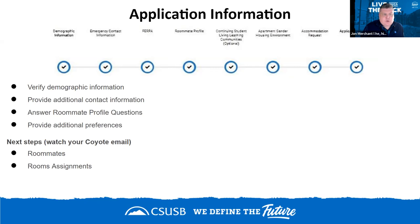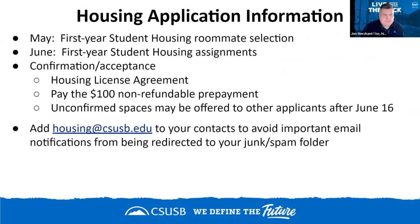Some important dates: in May, roommate selection will occur — that's another reason to apply early and get your application in by May 1st. In June is when you'll actually get your housing assignments and roommates, so you'll know a couple of months in advance who your roommate is and what your housing assignment is.